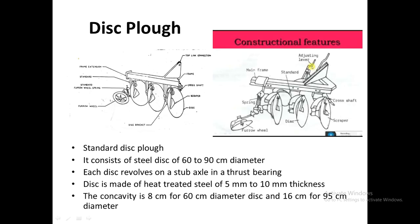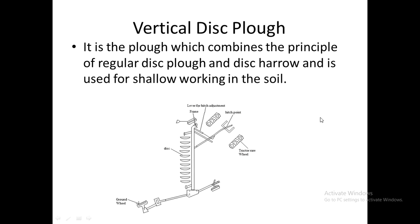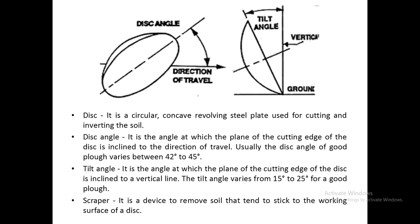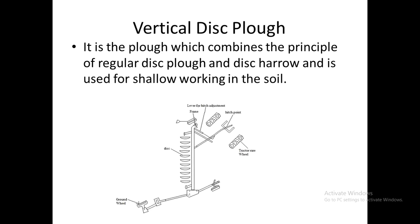The scraper is a device used for removing particles stuck to the disc, which occurs when the soil is very sticky or has high clay content. There are two types of disc plows: the vertical disc plow and the standard disc plow. The vertical disc plow combines the principles of a regular disc plow and a disc harrow.